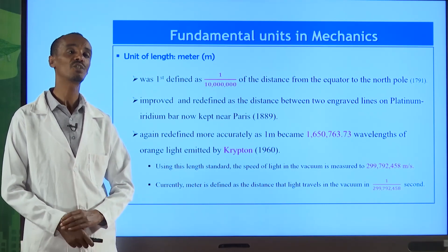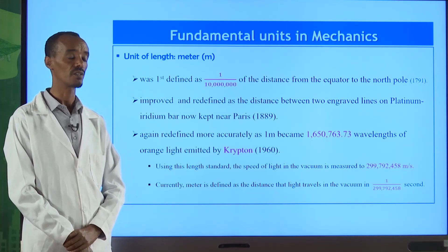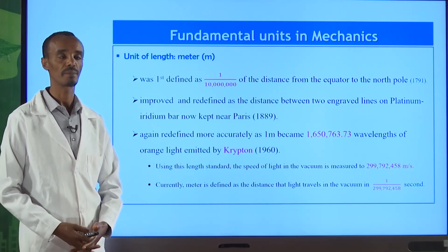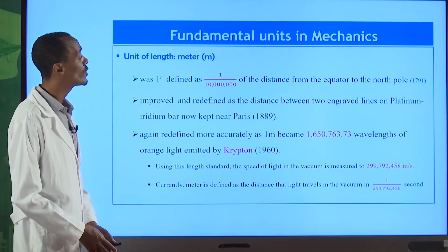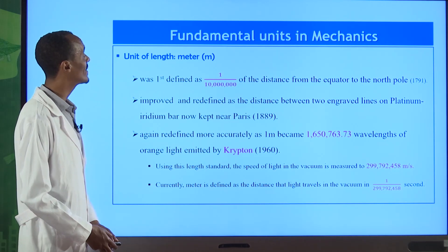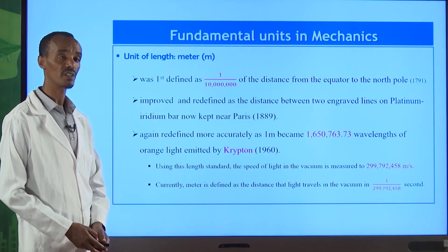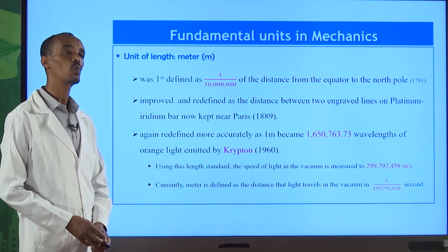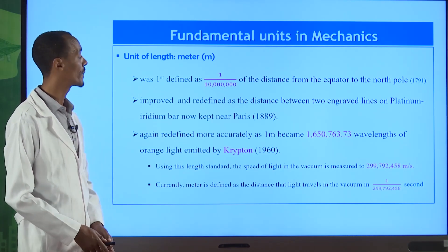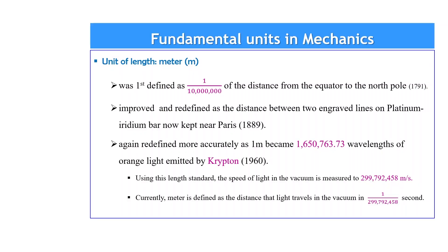In mechanics we have three special fundamental physical quantities: length, mass, and time. Regarding the SI unit for length — one meter — it was first defined as one over ten million of the distance from the equator to the North Pole. This was the first definition given to explain the size of one meter.